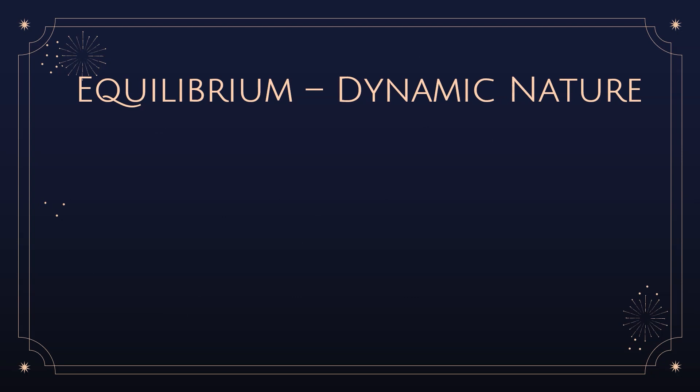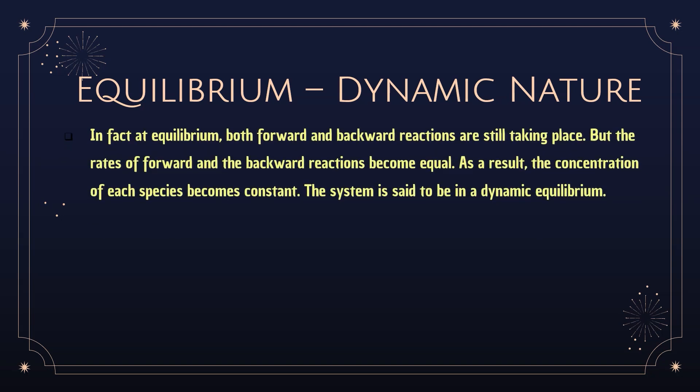Equilibrium is called dynamic in nature because at equilibrium, both forward and backward reactions are still taking place, but at equal rates. As a result, the concentration of each species becomes constant, and the system is said to be in dynamic equilibrium. It can move in either direction depending on the conditions applied.